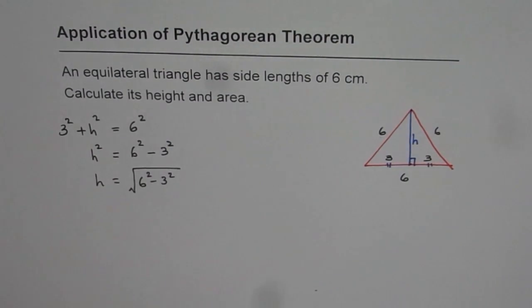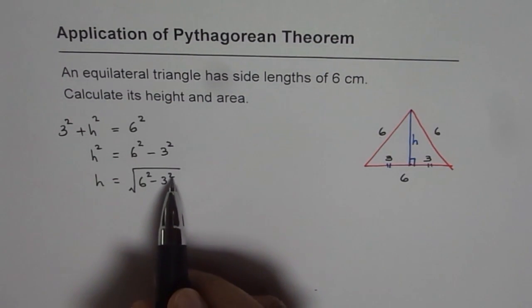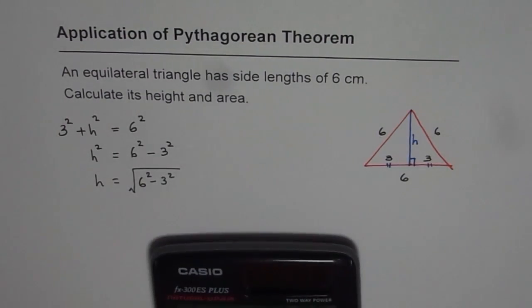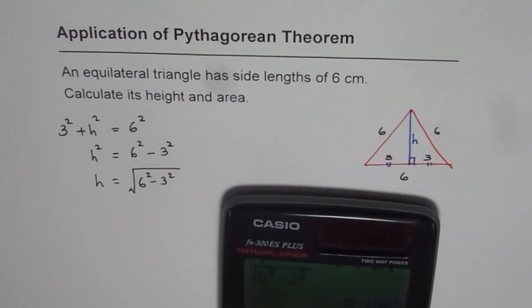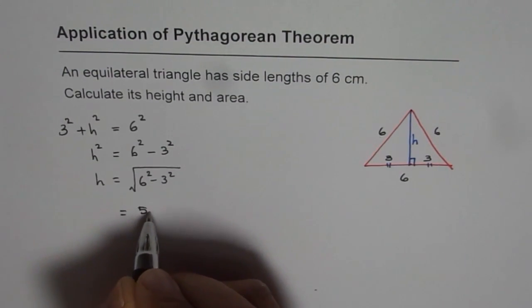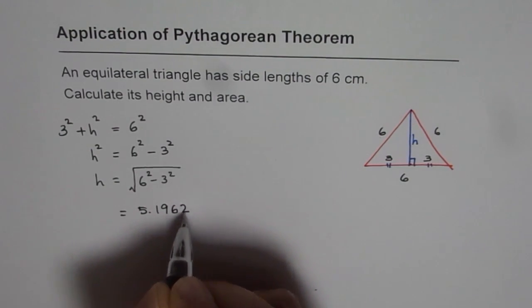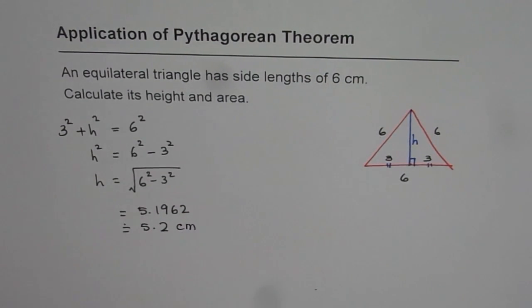So that gives you the height. You can always use the calculator to find this answer. So we are basically looking for 6 square is 36 minus 9 and square root. So let us figure it out. So we have square root of 6² and we have to take away 3² to get 5.1962. So we get this answer as equal to 5.1962. It could be rounded to 5.2 and the units are centimeters. So that becomes the height of this triangle.